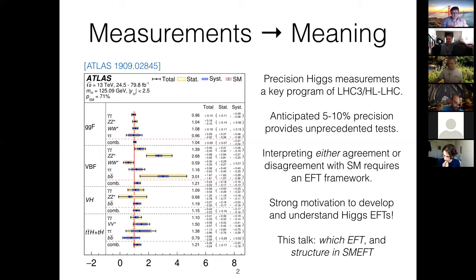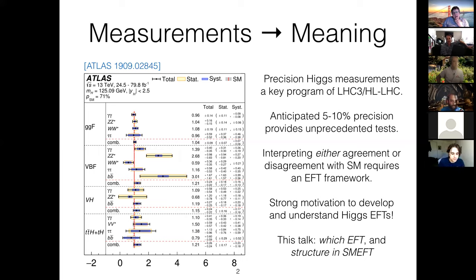Higgs measurements are one of the few sets of interesting measurements where our current precision is statistics-limited. Even during the more complicated run conditions of the high-luminosity LHC, the precision will increase substantially because the final states are relatively clean. At the end of the day, we expect to be able to get 5% to 10% precision in most channels for Higgs couplings — which, considering when the LHC was constructed, we didn't think we could discover the standard model Higgs, is quite an amazing development.